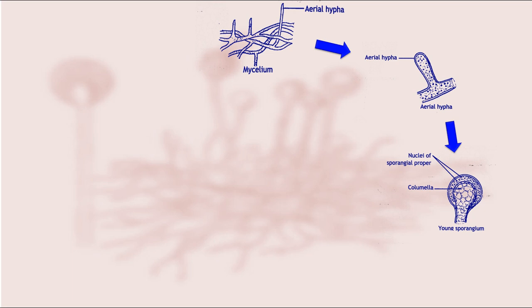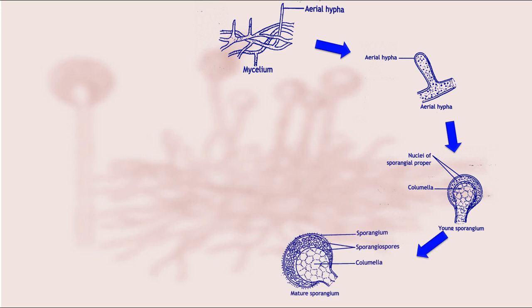The central region is converted into sterile part of sporangium that is columella which helps in bursting of sporangium. The peripheral region splits into a number of multi-nucleated pieces and each of them organizes a spore called sporangiospore.